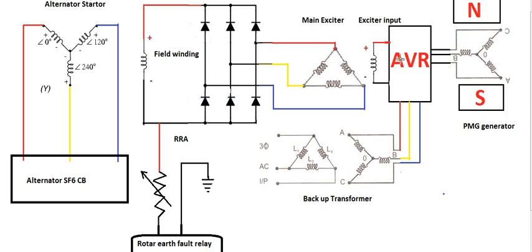Then we will use the AVR — Automatic Voltage Control. In this case it is a MMI. The AVR input is called PMG. PMG is the input of the AVR; in the input is the rotating rotor — the Rotating Rectifier Assembly. Then the field winding — the flux is called rotor voltage. The voltage goes to the alternator SF6 breaker.